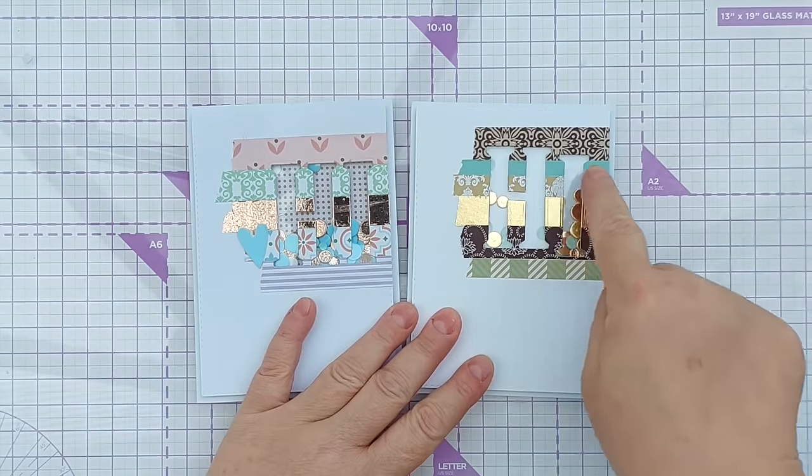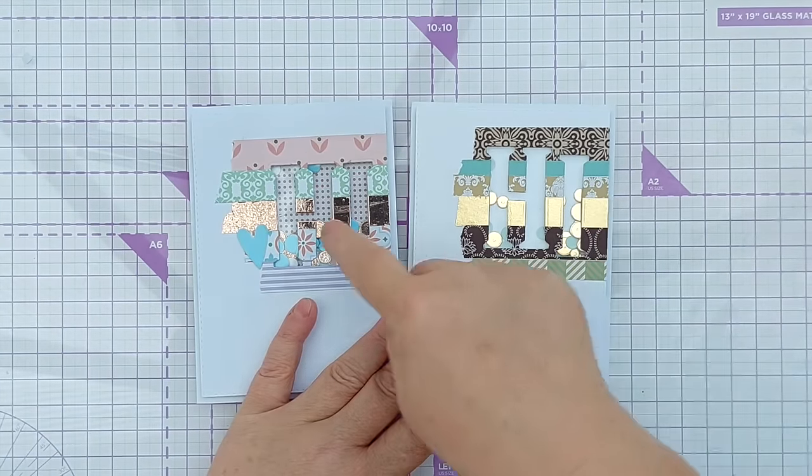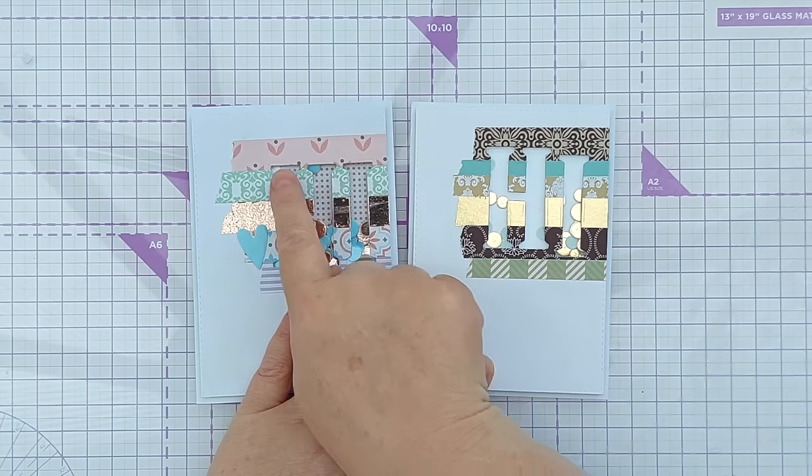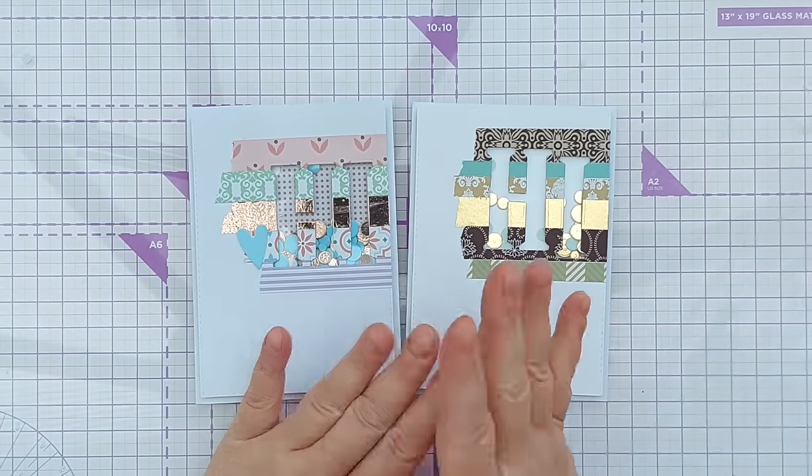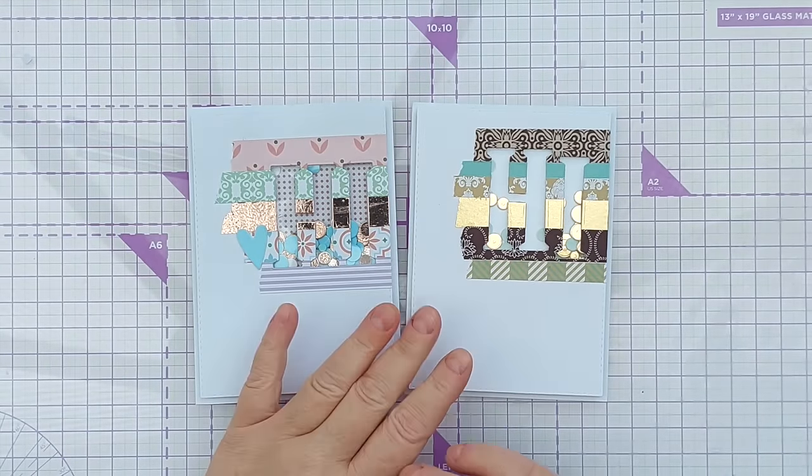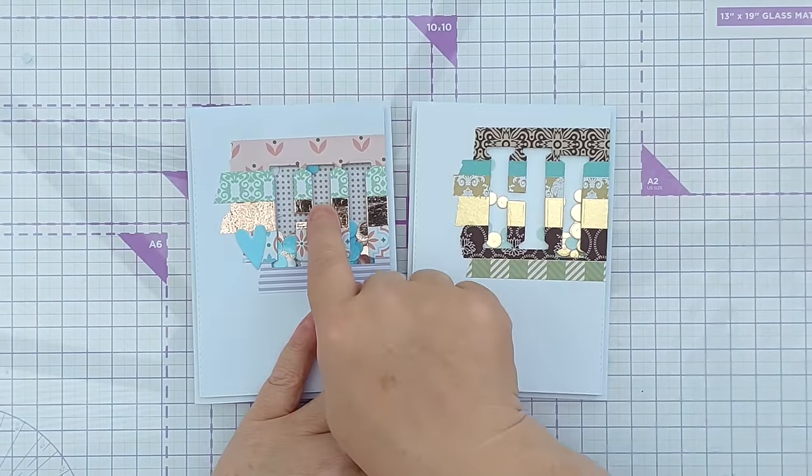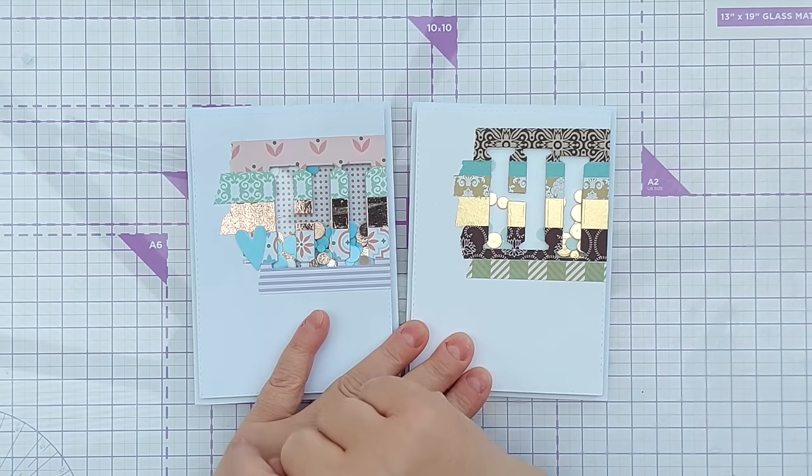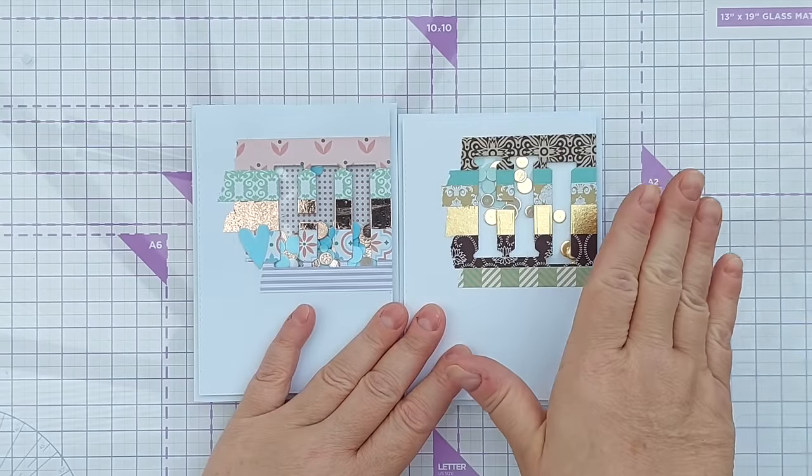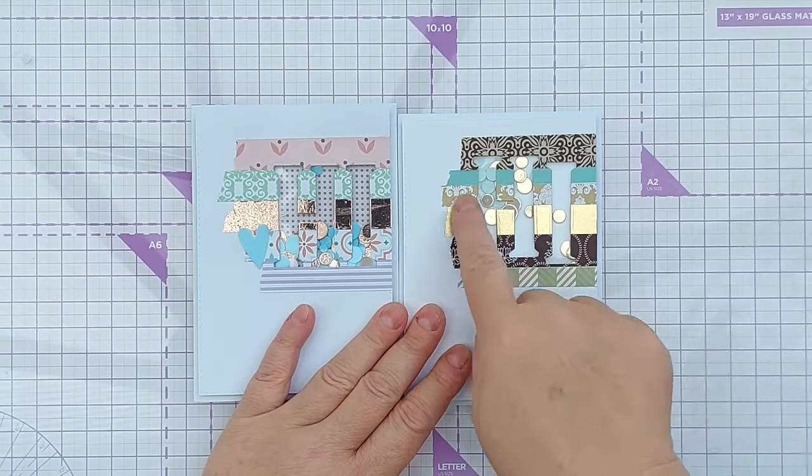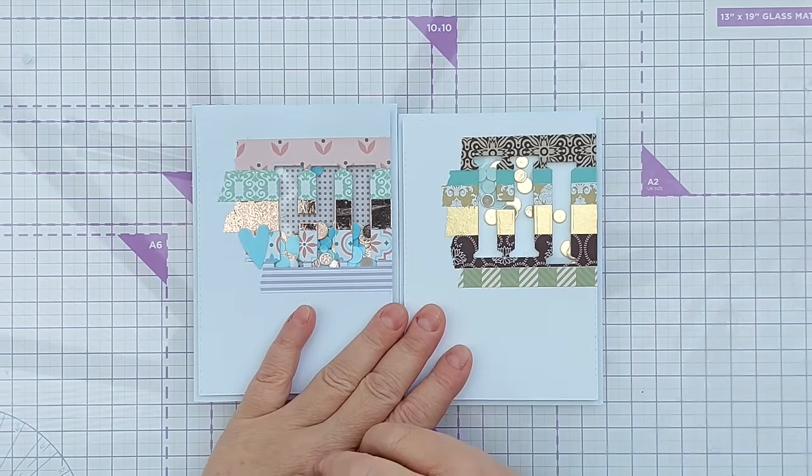Also I staggered the letters. So on here the H and the I are level. But here the H is higher than the I. I just thought that was adding a little bit more interest. And instead of adding a pattern paper behind the aperture, I left it white. And the gold circles are made from gold card. But on the back I put some minty green washi.